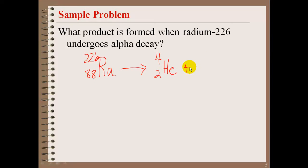So what must be produced? 226 minus 4 is 222, and 88 minus 2 is 86, so we are looking at radon. There's our alpha decay. Now usually with these nuclear decays, you will be told what decay is going on. You need to know the specific decay that the element goes through.